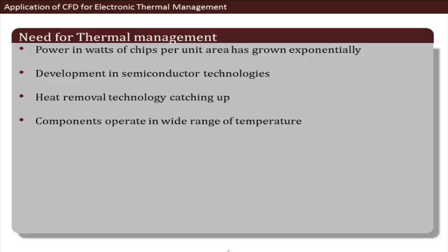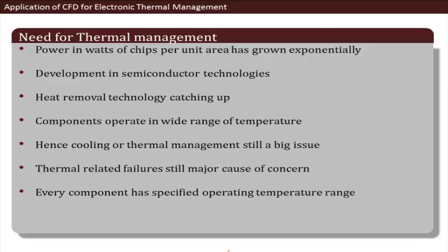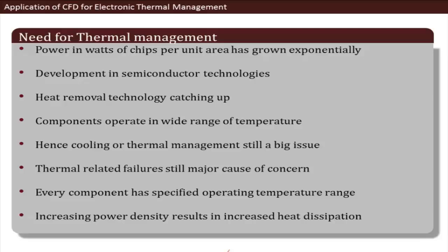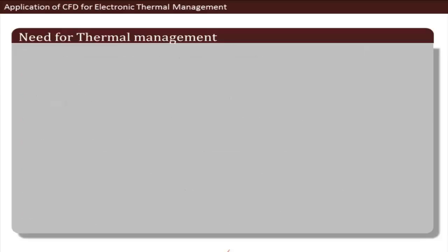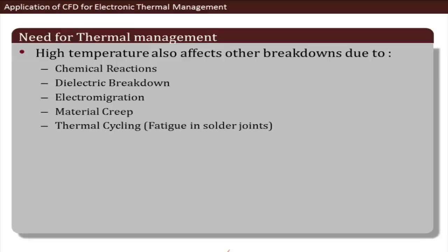Heat removal technology is still catching up with the rate of chip development. Components operate across wide temperature ranges — from extreme aerospace environments to roughly 80°C in consumer computers. Thermal-related failures remain a major concern. Higher temperatures can cause chemical reactions, dielectric breakdown, electro-migration, material creep, thermal cycling, and fatigue in solder joints and board work. Every component has a specific operating temperature that must be maintained.